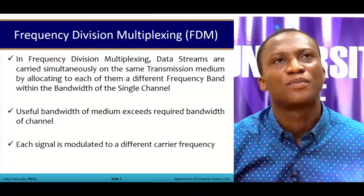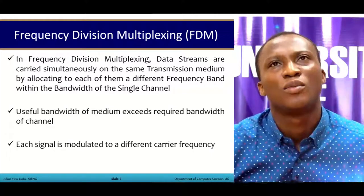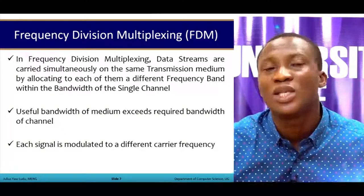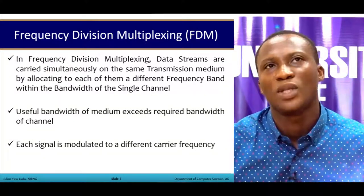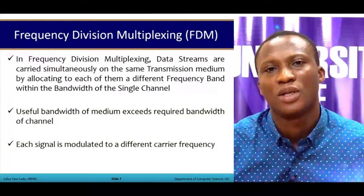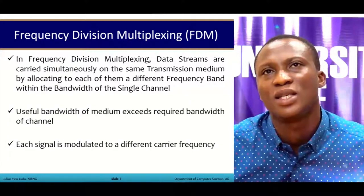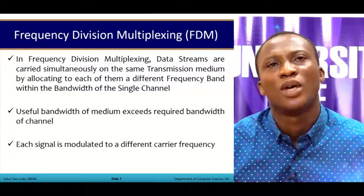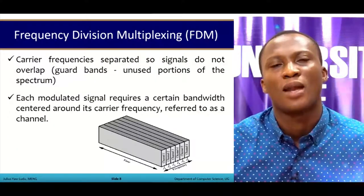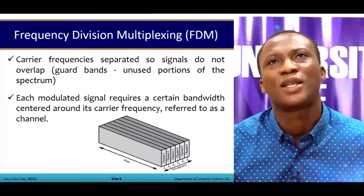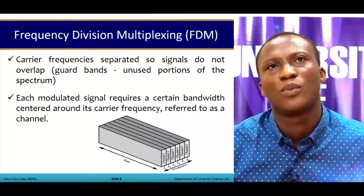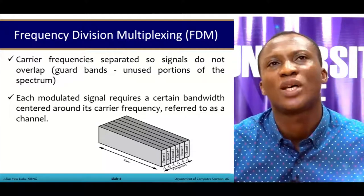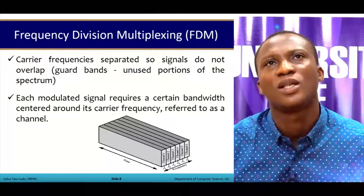In frequency division multiplexing, data streams are carried simultaneously on the same transmission medium, each allocated a different frequency band within the bandwidth of the single channel. The useful bandwidth of the medium exceeds the required bandwidth of the channel. Each signal is modulated to a different carrier frequency, and these carrier frequencies are separated so that signals do not overlap. Guard bands — the unused portions of the spectrum — ensure the carrier frequencies don't overlap.